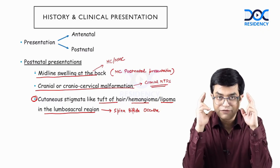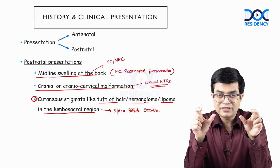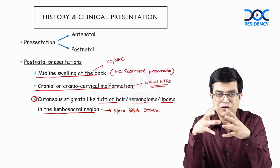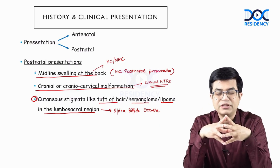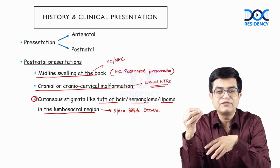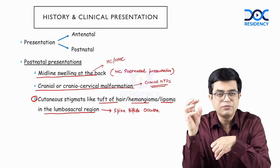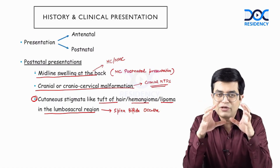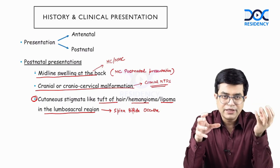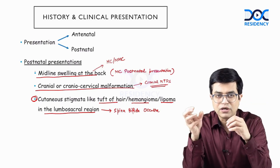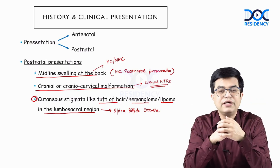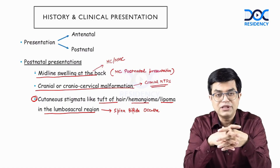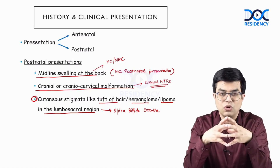Let us do a quick revision mentally. Neural tube defects involve difficulty in the closure of the neuropores in the primitive neural tube, mostly occurring in the third or fourth week of intrauterine life. You have broadly two varieties: cranial and caudal. Cranial are usually more severe and include conditions like anencephaly.